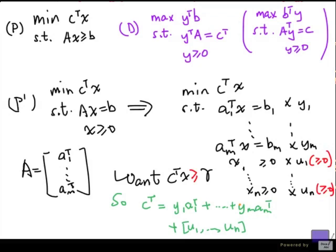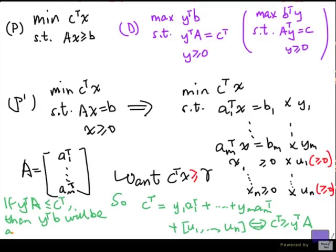u1 up to un are required to be non-negative. This is equivalent to c transpose greater than or equal to y transpose A. So if we can find a y such that y transpose A is less than or equal to c transpose, then y transpose b will be a lower bound for the optimal value of P prime.